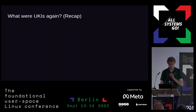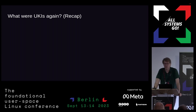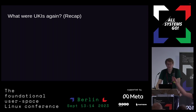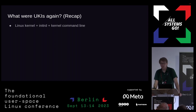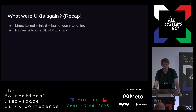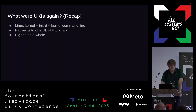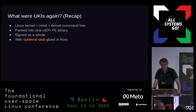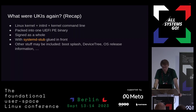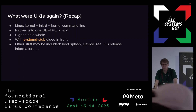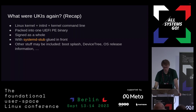So let's jump right in. If you have any questions, totally interrupt me — I much prefer having discussions here. So what were UKIs again? It's a bit of a recap. The really short summary: it's a Linux kernel, an initrd, a kernel command line — all packed into one UEFI PE binary so that you can sign it as a whole, with a program called systemd-stub glued in front, and possibly other stuff included — like the boot splash, a device tree image for embedded devices, and operating system release information so you have metadata about what you're looking at before you boot it.